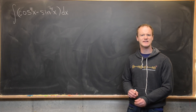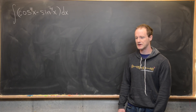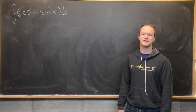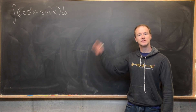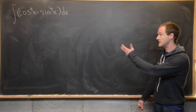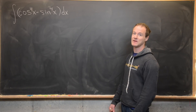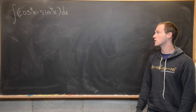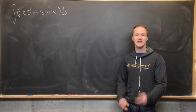Here we're going to look at two fairly simple but interesting antiderivatives that require some interesting tricks in order to evaluate. The first one we're going to look at is the indefinite integral of cosine to the fourth minus sine to the fourth dx.